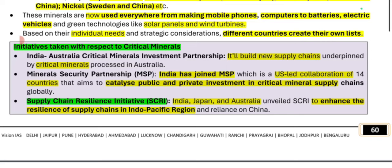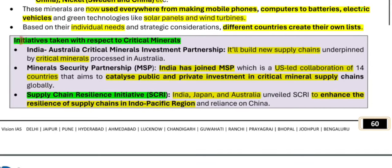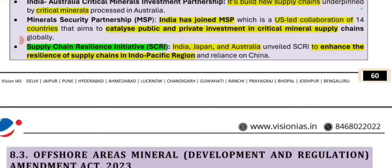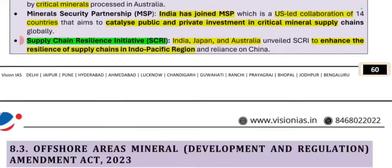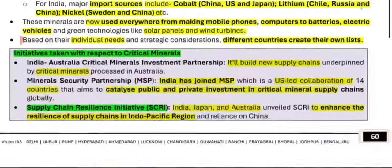India has joined the Mineral Security Partnership (MSP), which is a US-led collaboration with 14 participating countries. Their aim is to catalyze critical minerals supply chains through public and private investment. There is also the Supply Chain Resilience Initiative involving India, Japan, and Australia, which aims to increase supply chain resilience in the Indo-Pacific region.